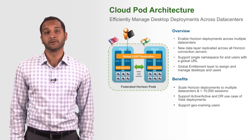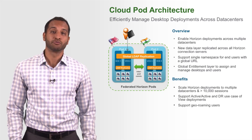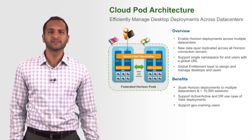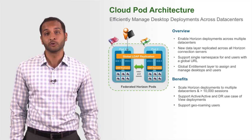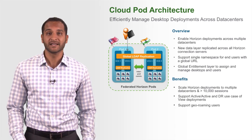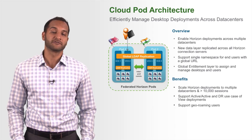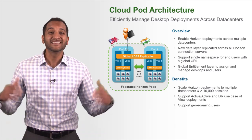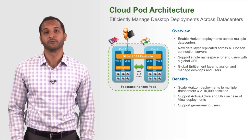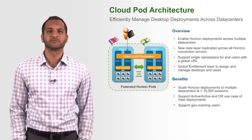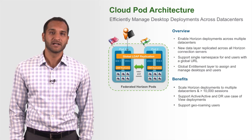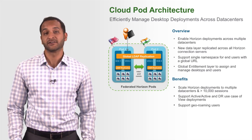You now have the ability to have the data layer replicated across Horizon connection servers, as well as a single namespace for end users with a global URL, allowing them to roam freely and connect to whichever server is closest. This is a huge benefit for customers that have multiple data centers and roaming users, as well as customers concerned with the DR use case in making sure they have an active-active data center configuration.